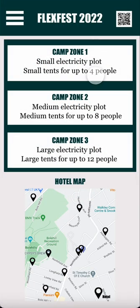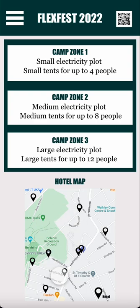The accommodation section, once they've booked accommodation, tells them what zones correspond to which areas on the festival map. They've got the camp zones, so if they're in zone one or two it tells them a bit about what's on that plot and how to use it. At the bottom there's also a hotel map for those who booked hotels through the website, and the QR code is present here too.